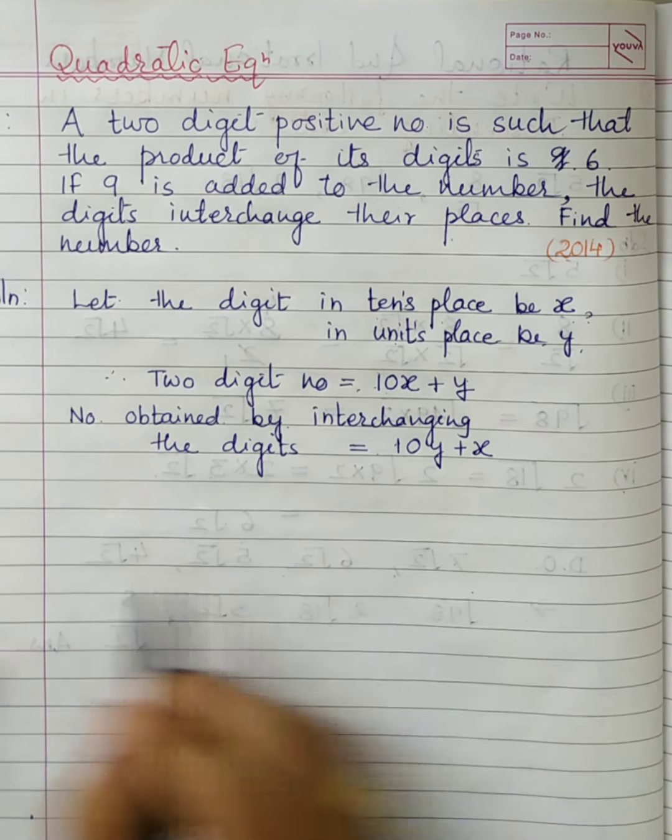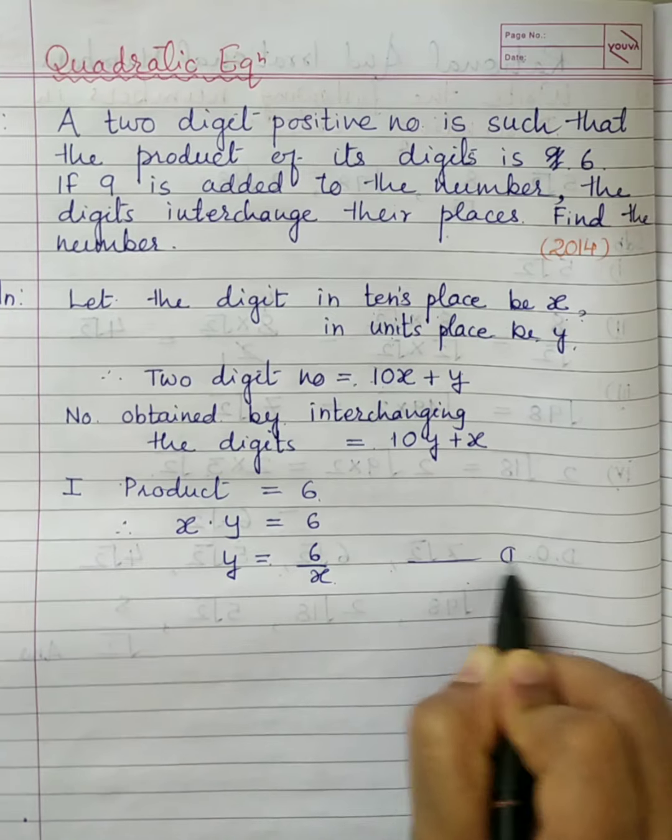Now, what is the first condition giving us? According to the first condition, the product of digits is 6. So x × y = 6. From this you can find y in terms of x: y = 6/x. Keep this in mind as the first condition.